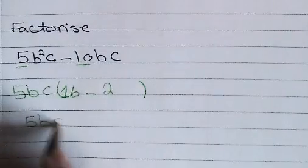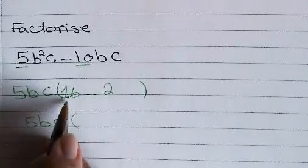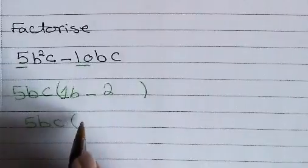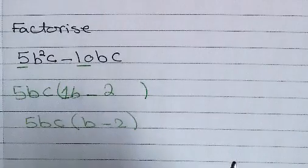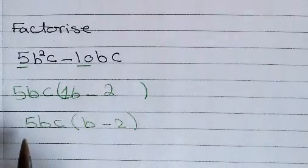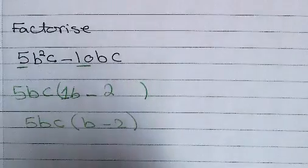The final answer is, because 1 is the coefficient of b, we don't have to write it, so the answer is b minus 2. So 5b squared c minus 10bc factorizes to 5bc, open brackets, b minus 2.